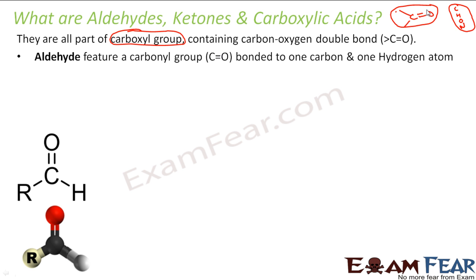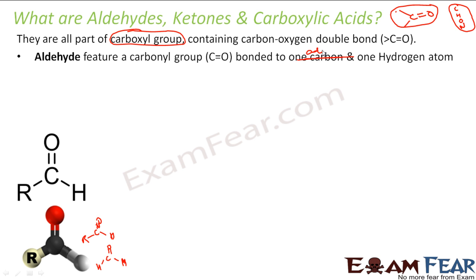Now, if in this C=O bond you put at least one hydrogen, it becomes an aldehyde. For example, you take the C=O and put hydrogen on at least one side — the other can be an alkyl group or also hydrogen. Both cases give you an aldehyde. So an aldehyde is a carbonyl carbon bonded to at least one hydrogen.